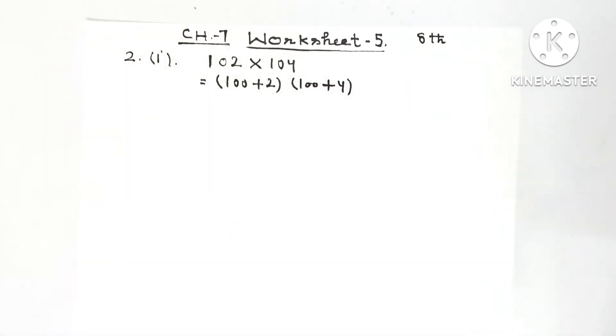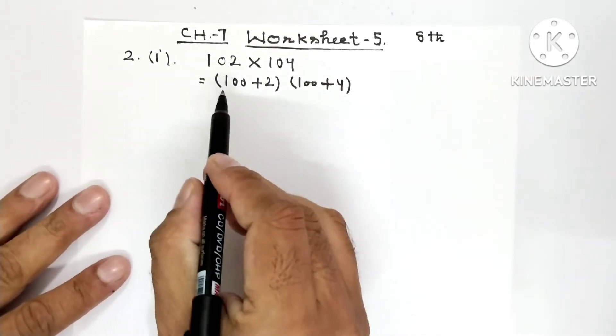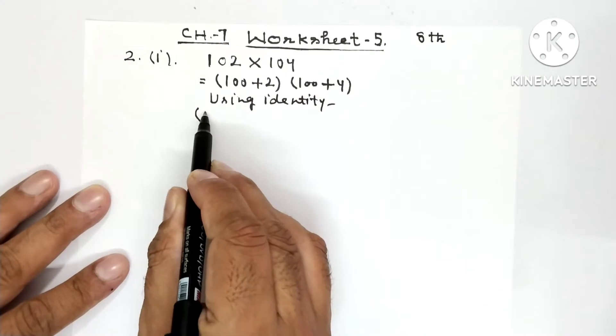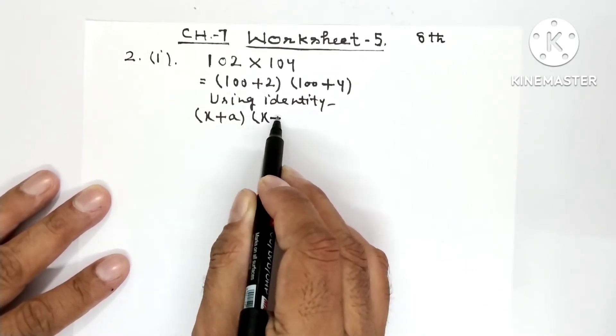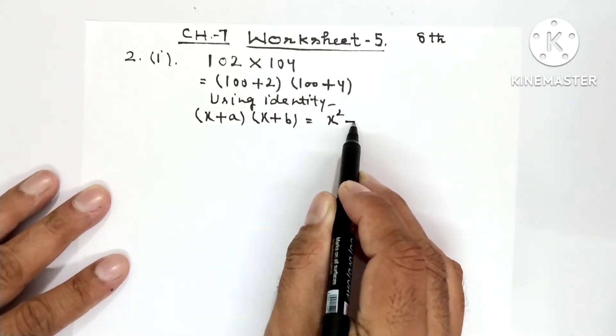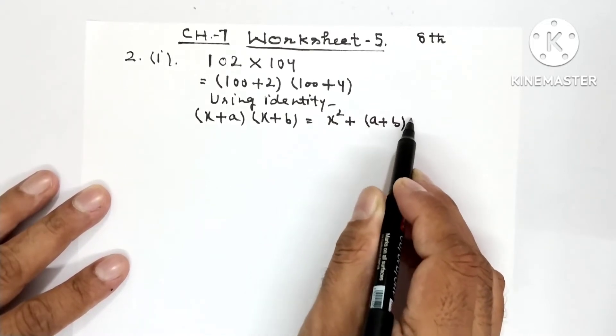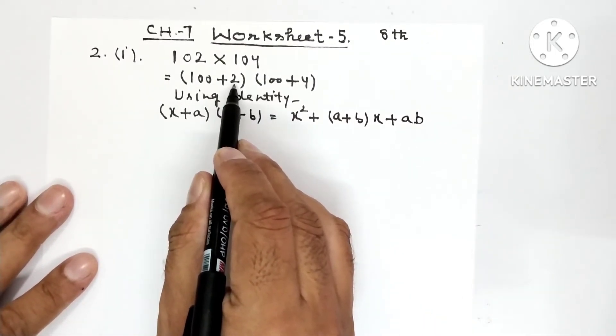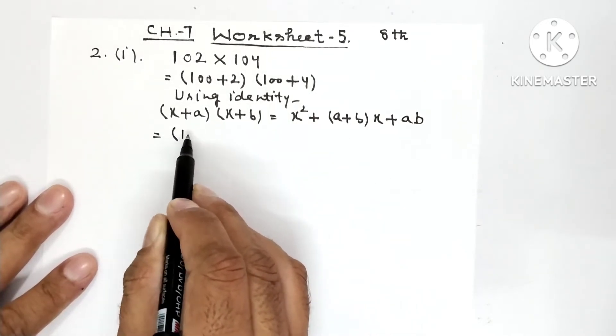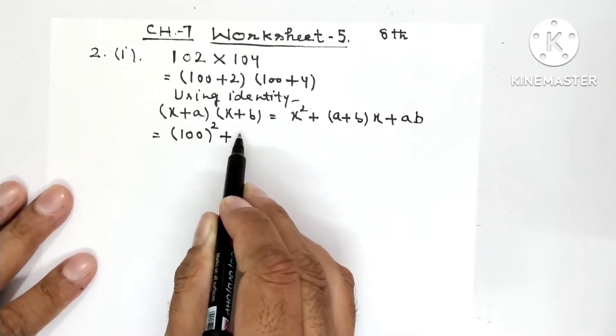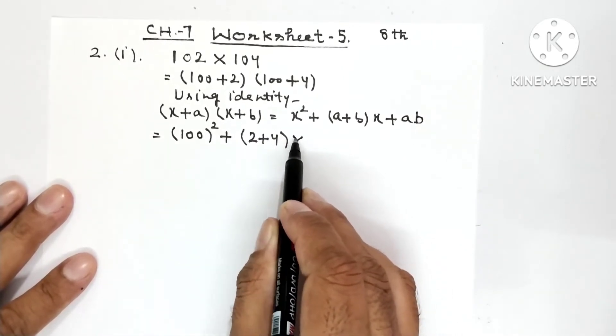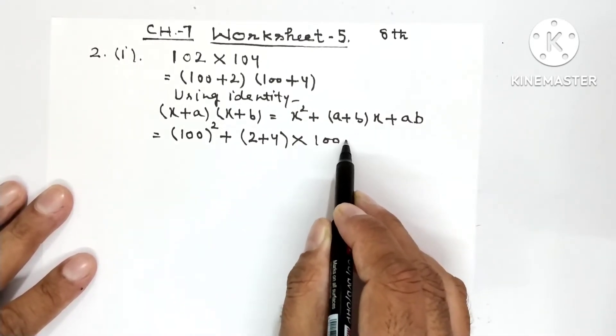So we have identified here which identity will be applied. So here identity will be (x + a)(x + b). Using identity (x + a)(x + b), it is equal to x² + (a + b)x + ab.